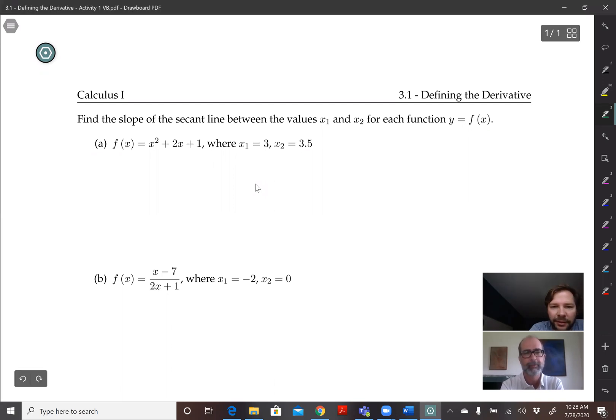So remember that the slope of the secant line is f(x2) minus f(x1) all over x2 minus x1.